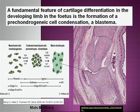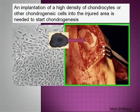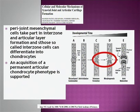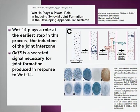A fundamental feature of cartilage differentiation in the developing limb in the fetus is the formation of a prechondrogenic cell condensation — many cells fuse, and in this condensate they start to produce cartilage. When we do a cell transplantation, we also use a large number of cells which form a condensate to start chondrogenesis. In embryology, joint formation involves special stem cells called interzone cells. WNT14 plays a role at the early step in joint interzone induction, and GDF5 is a secreted signal necessary for joint formation produced in response to WNT14.